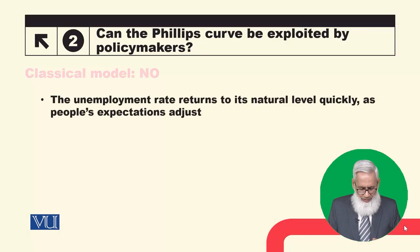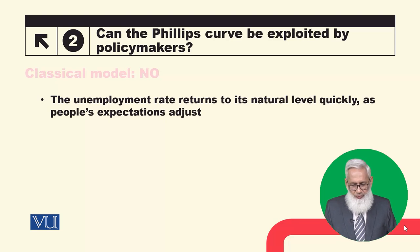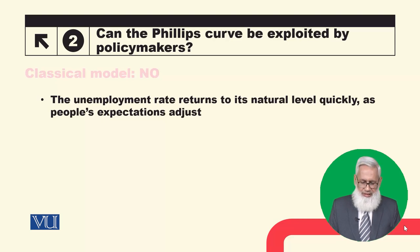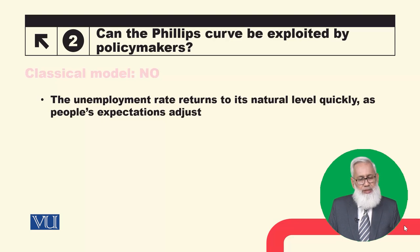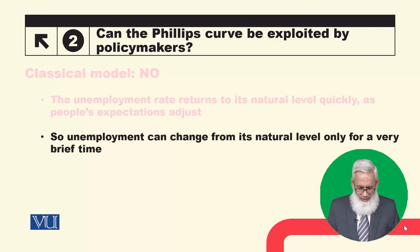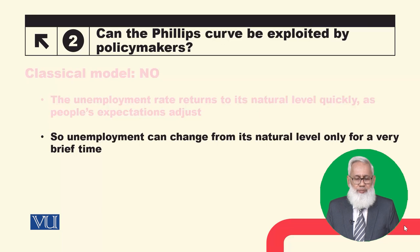The classical answer is that it is not possible. The unemployment rate returns to its natural level very quickly as people's expectations adjust. Prices are flexible and quickly adjust, so people's rational expectations adjust very quickly — therefore this relationship cannot be exploited. Unemployment can change from its natural level only for a very brief time period.